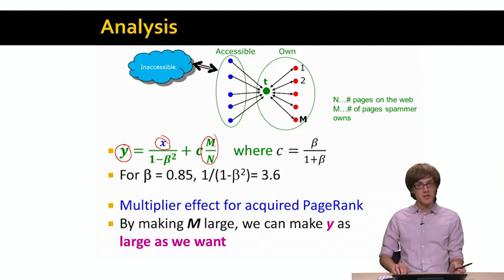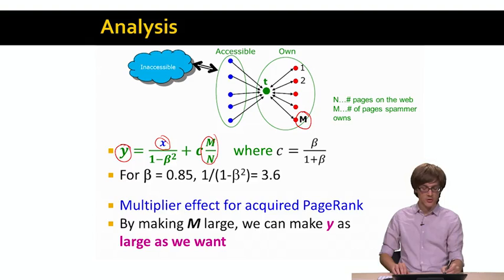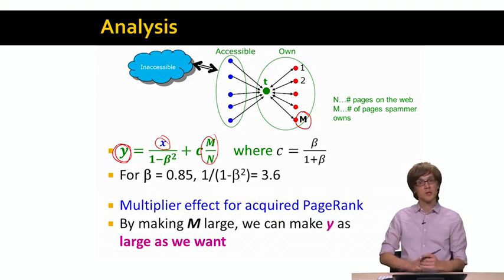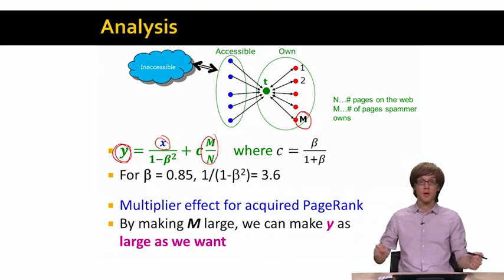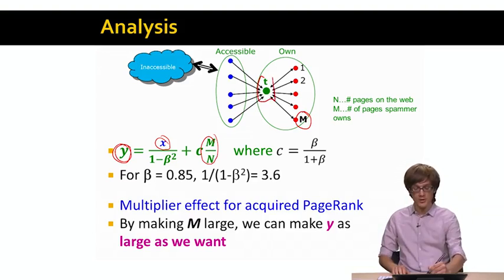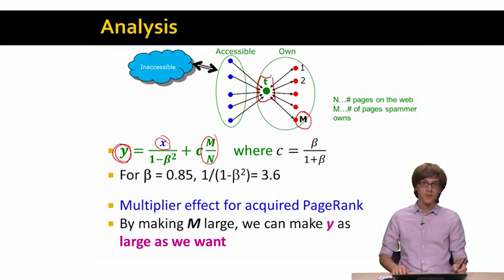So what this means is basically that the more web pages the web spammer owns, the bigger the M, the higher the score of the target page y will be. So in some sense web spammer can create arbitrarily large number of pages. So M can be arbitrarily large, which means that the page rank score of the target page T can also get arbitrarily large.